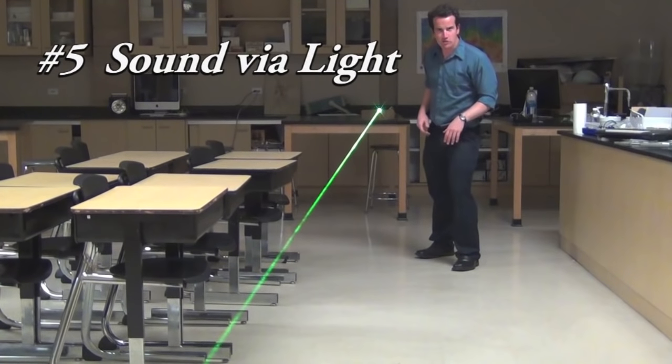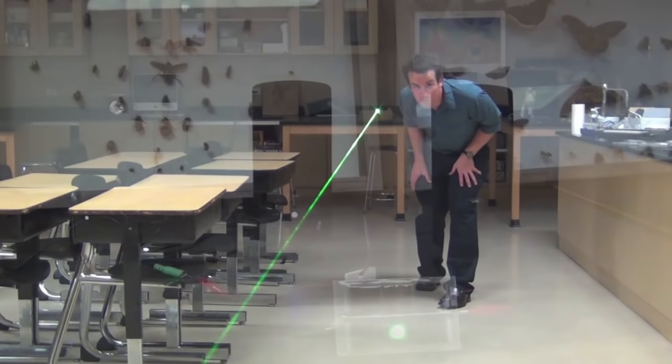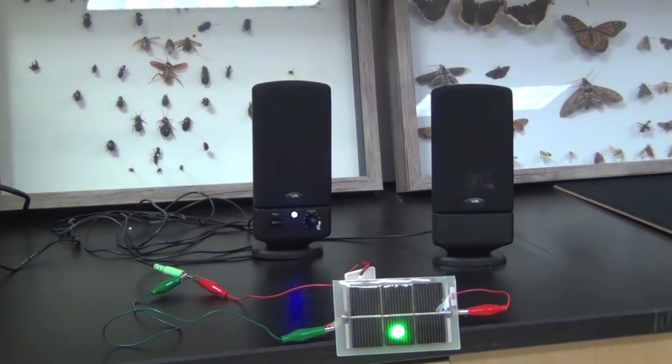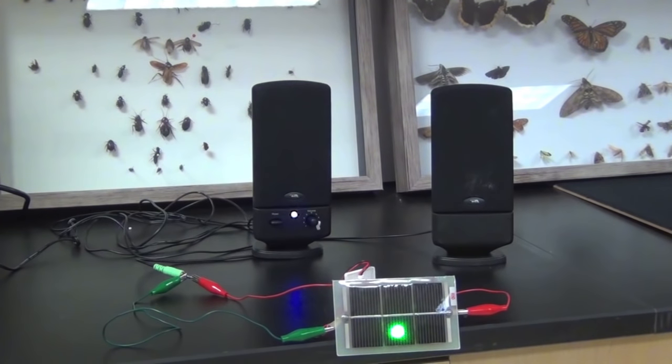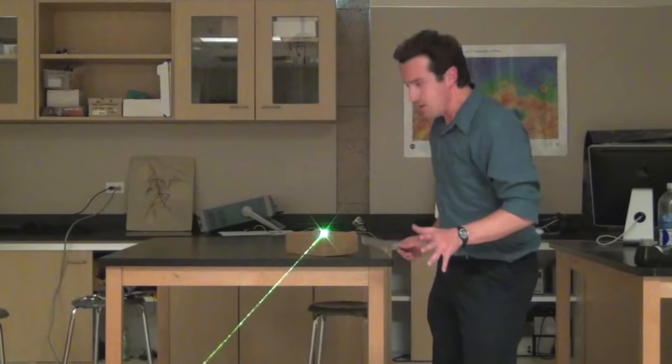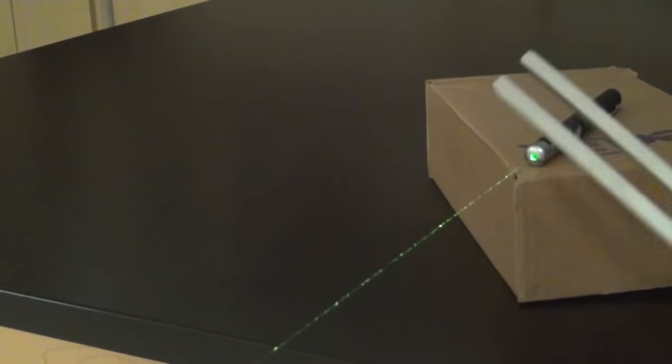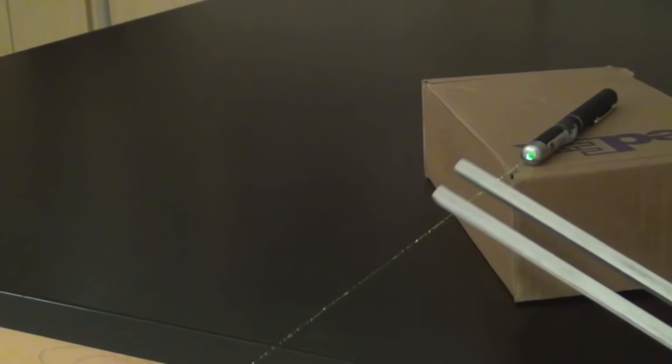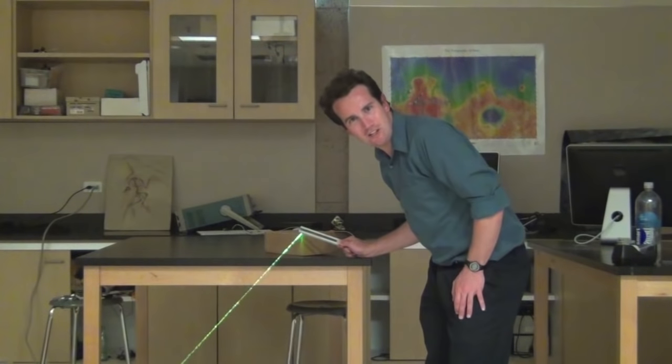For this demonstration, I'm setting a beam of laser light all the way across the room and it lands on this solar cell which is connected to a speaker system. When I block the beam with my hand, you can hear it on the speakers. Now partially blocking the beam with a tuning fork, you can hear it on the speakers.